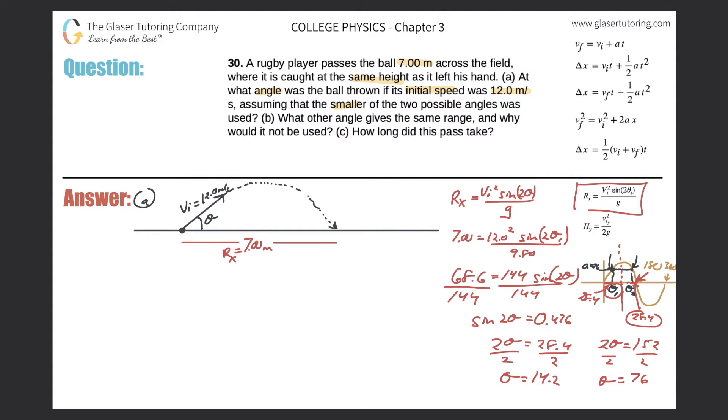These would be the two angles. Notice what's interesting: if you take 14.2 and add it to 76, you get 90, or thereabouts. There's another shortcut: you could have just solved for this angle of 14.2 and then simply subtracted that from 90 to find your other angle. We found the two angles. Assuming that we take the smaller of the two, this would be the answer to letter A: 14.2 degrees.